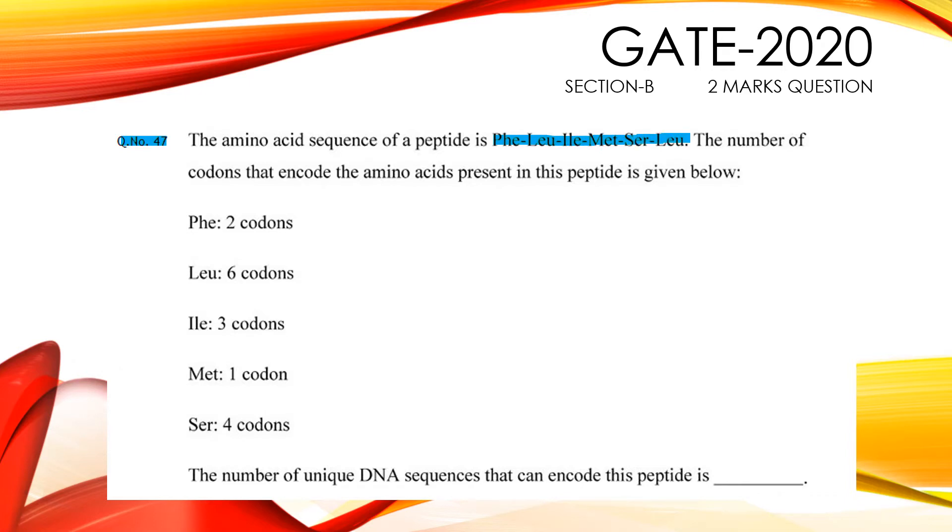The number of codons that encode the amino acids present in this peptide is given below. Phenylalanine has 2 codons, leucine has 6 codons, isoleucine has 3 codons, methionine has 1 codon, and serine has 4 codons.